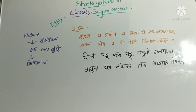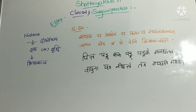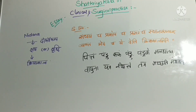Now, what is Shat Kriya Kala? Kriya Kala means the time period — the time of treatment in the process of manifestation of a disease is considered as Kriya Kala. As there are six stages in number, it is considered as Shat Kriya Kala. The six stages are: Sanchayam, Prakopam, Prasaram, Sthana Samshriyam, Vyaktam, and Bhedam — these are the Kriya Kala. The reference is Sushruta Sutra Sthana.